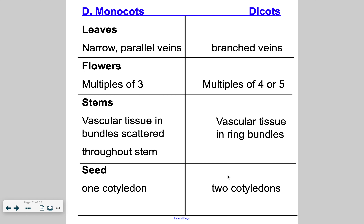When you're driving the dirt roads of Traverse County and you start to see crops emerge from the ground, you can look at those leaves and count them. If it's just one — looks like grass — then it's corn, which is a monocot. If you see two, you can say soybeans are planted there. Other ways to tell the difference: monocot leaves are narrow and parallel, like grass. Dicot leaves are branched. For flowers, monocots are multiples of three; dicots are multiples of four or five.